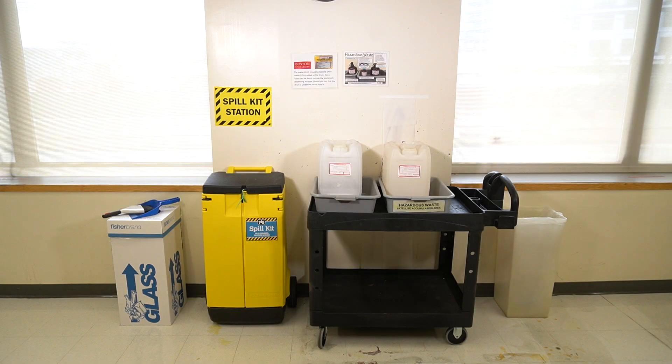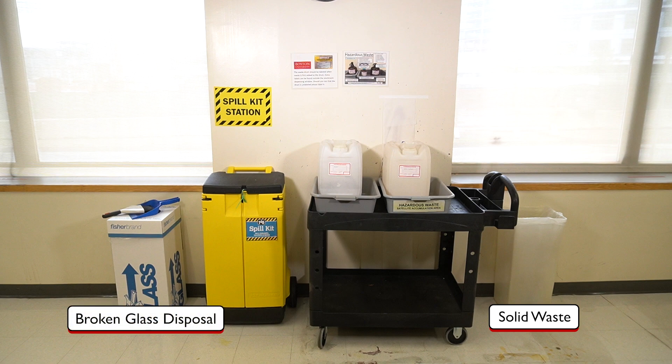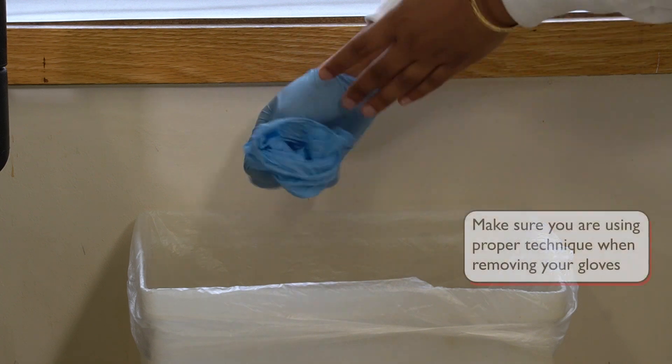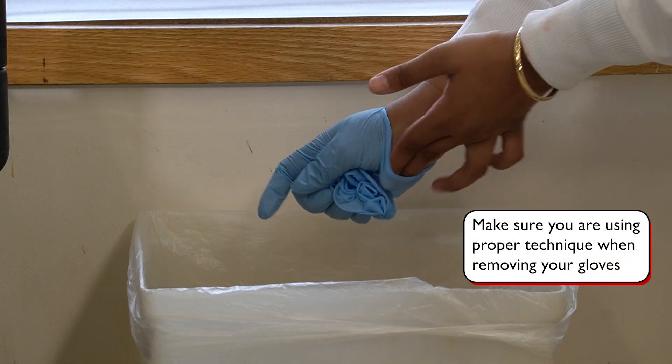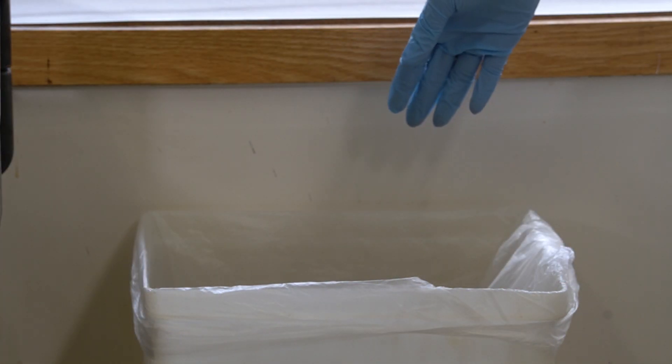There are three types of waste containers in our teaching labs: solid waste bins, broken glass disposal boxes, and liquid waste bins. Solid waste, such as used gloves and plastic pipettes, must be disposed of in the solid waste bin.